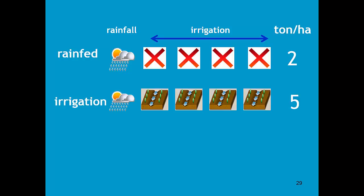If, on top of the rainfall, I apply irrigation water, the yield might be high, for example 5 tons.